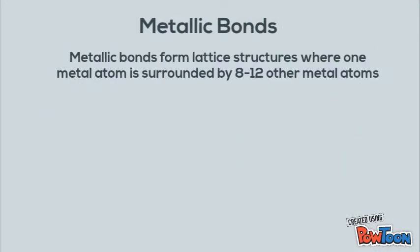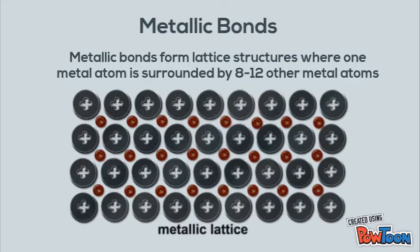Metallic bonds form lattice structures where one metal atom is surrounded by 8 to 12 other metal atoms. You can see here that each metal atom is surrounded by a handful, but when you think three-dimensionally we can get a lot more atoms to surround each one.